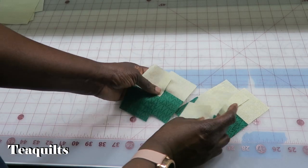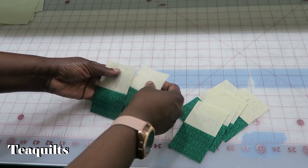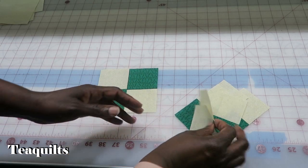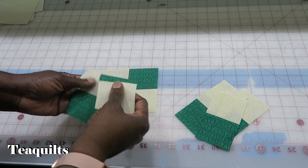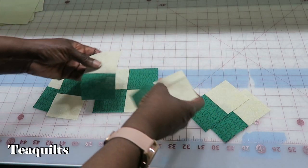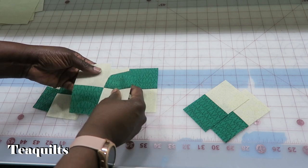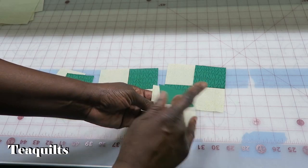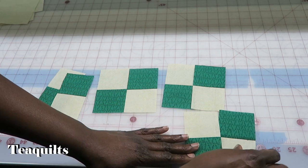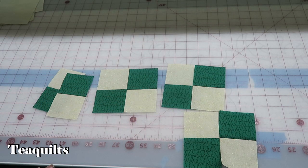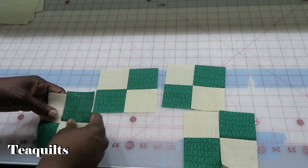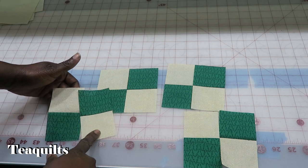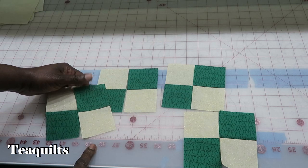So now that we have eight of these, we now want to make four four patch units. We're basically just going to be rotating the blocks like so, and we will make the four patch units. I'll go sew all of these four patch units together and then we'll come back.